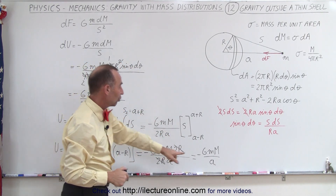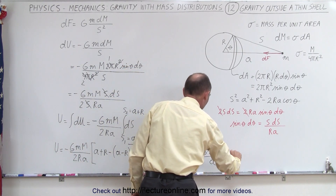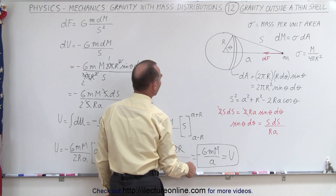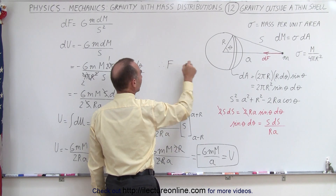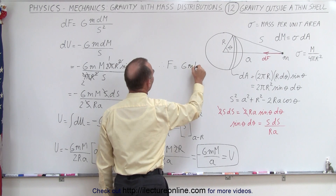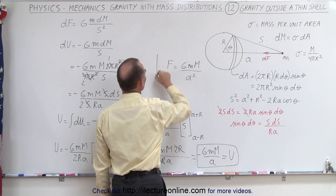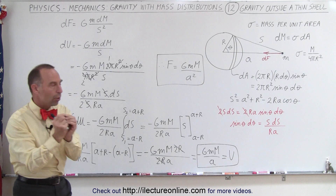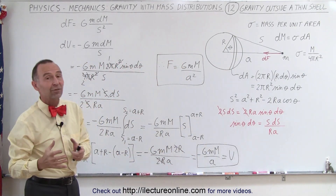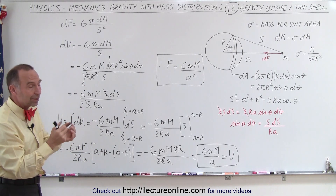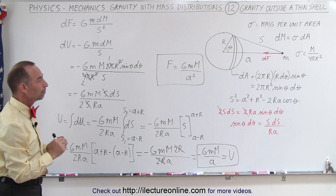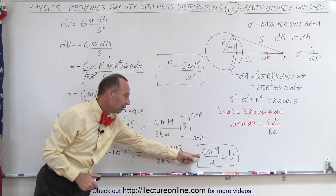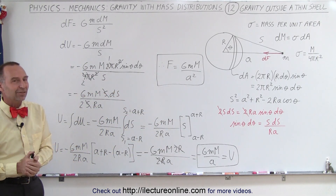To convert the potential energy to a force equation, we remove the negative sign and square the denominator. Therefore the force on the small mass is F = G·m·M / a². The force acts as if the entire mass of the shell is concentrated at its center — a point mass. This confirms that the gravitational force outside a thin shell is equivalent to that of a point mass at the center of the sphere.